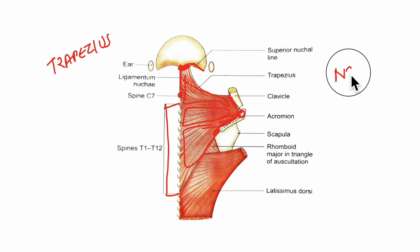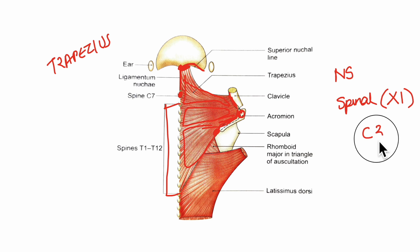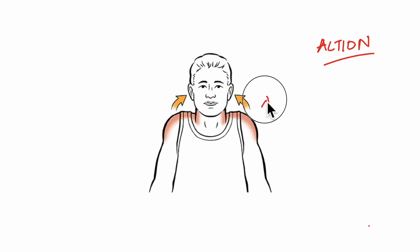Now understanding the nerve supply of the trapezius: it is mainly supplied by the spinal part of the accessory nerve, that is cranial nerve number 11. It also receives branches from the C3 and C4 spinal nerves. The upper fibers elevate the scapula as in shrugging, as you can see in this diagram.